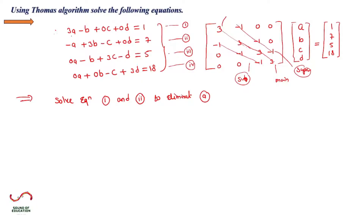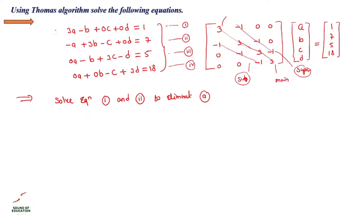Now write down equations one and two to eliminate A. Equation number one is: 3A minus B equals 1 (since C and D coefficients are zero). To eliminate A, we look at the coefficients 3A and minus A, and multiply equation number two by 3.